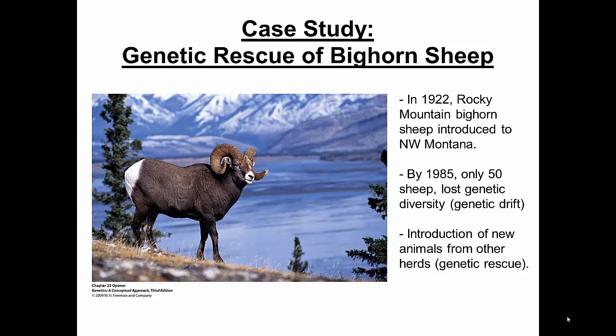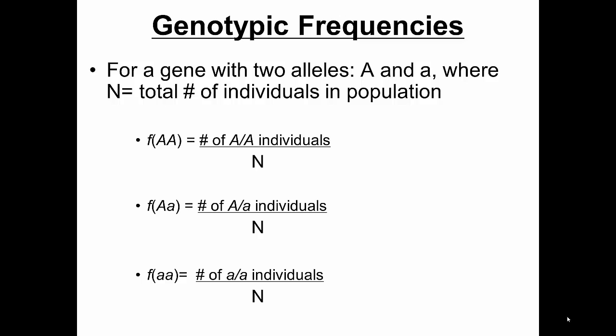If you have a small population, by chance or by genetic drift, you might have fixation of alleles — you might lose an allele and only have one allele dominate that population. That's what started to happen with this sheep population. As time went on, more animals were introduced after 1985 to try to achieve something called genetic rescue. What happened next was a slight rebound, but really only to about 120–130 individuals over the next 20 years. So genetic rescue is not something that is very easily achieved.